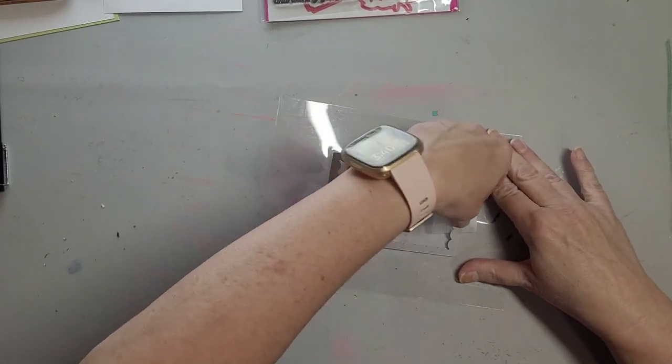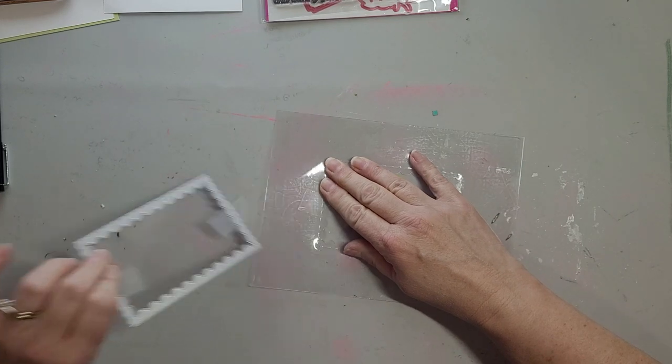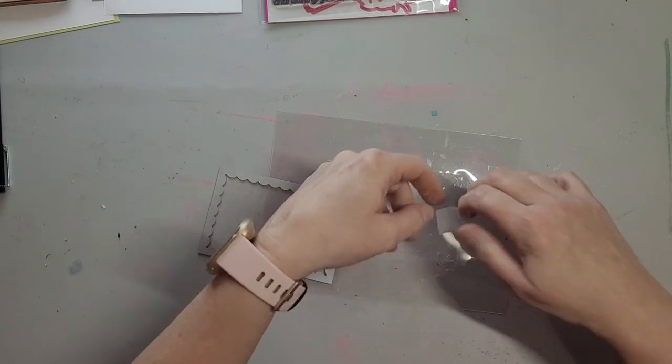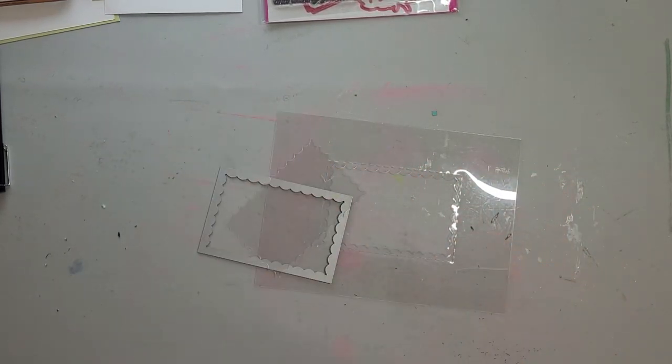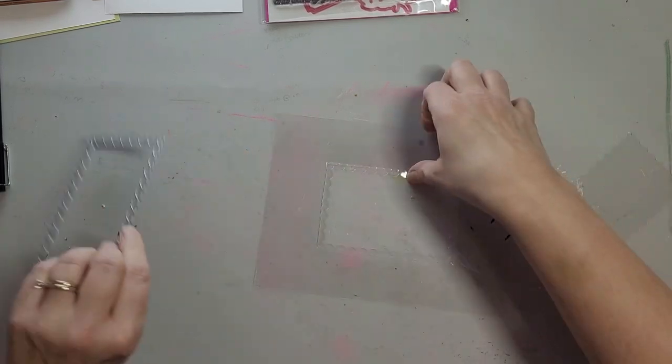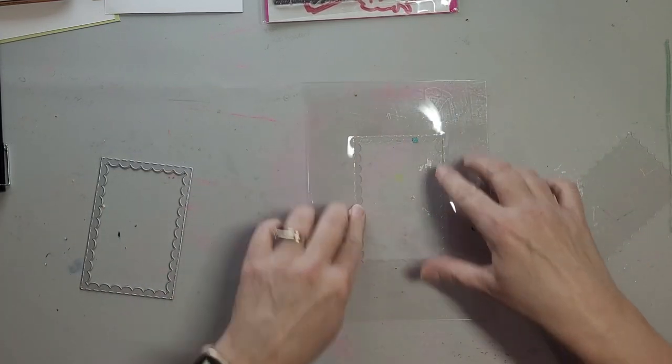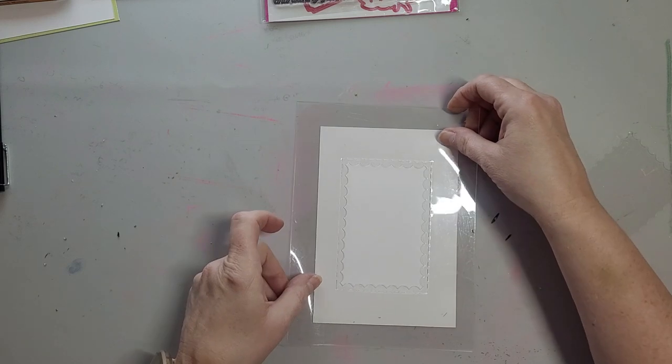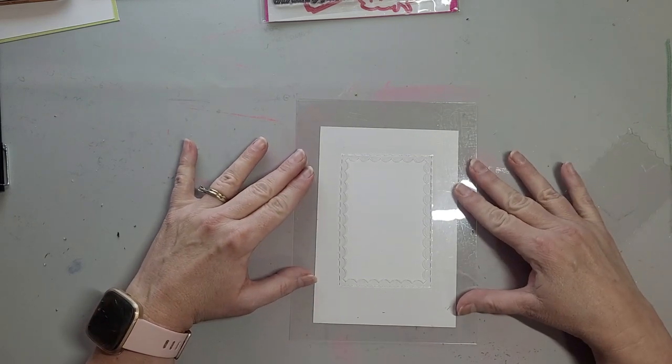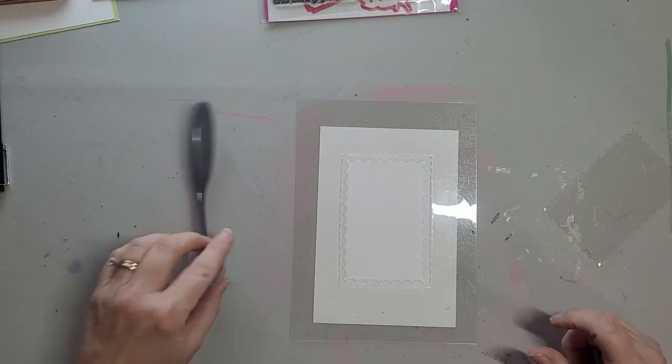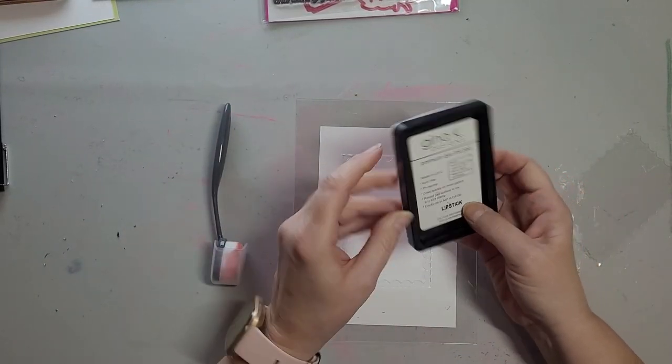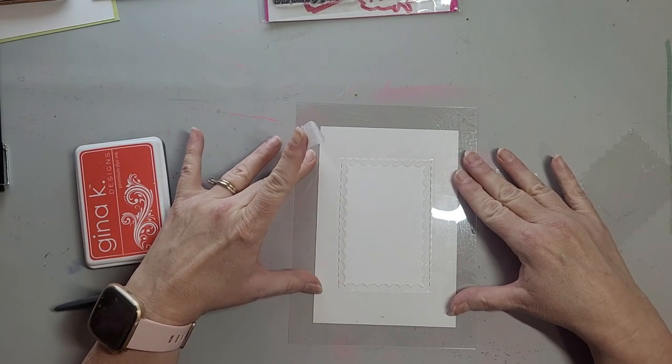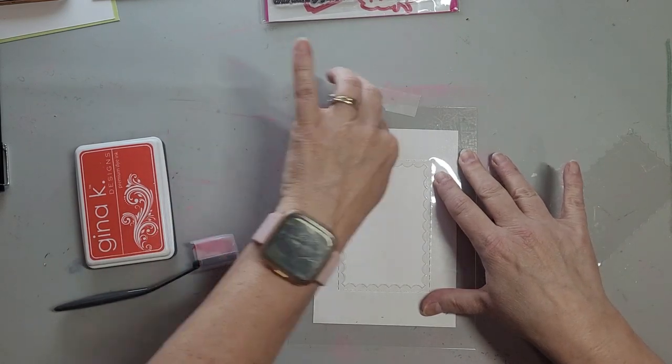Alright so let's take this off and see what we have. We have our inside piece, we have our scalloped edge. Now I pre-cut a couple of panels. These are going to be for a five by seven card. I'm going to do this one in Gina K's lipstick. I'm going to center it on my paper, tape one side down, tape the bottom down so it doesn't move.